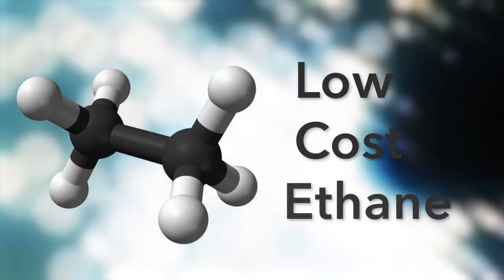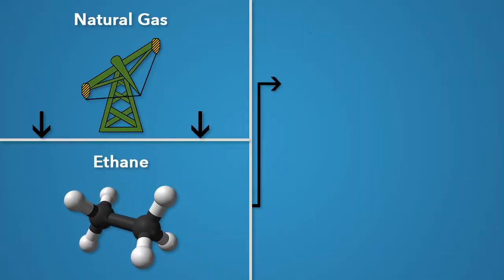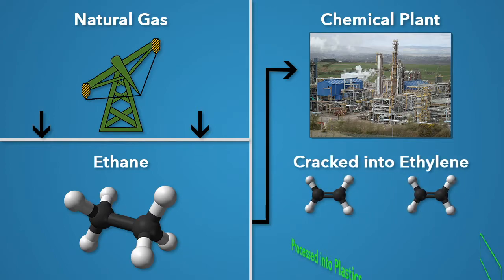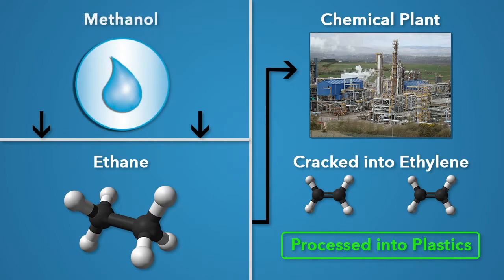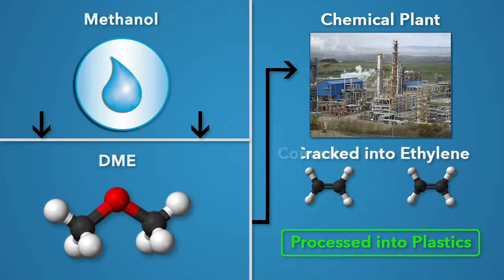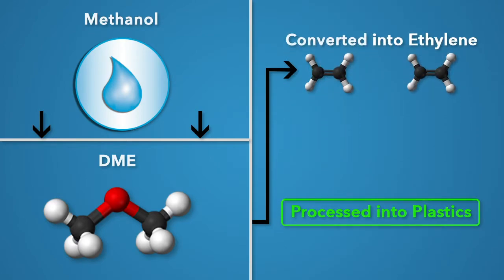In today's market, MTO is not so competitive due to the low costs of ethane. When comparing an MTO process, you compare the cost of methanol to the cost of ethane. Ethane comes from natural gas — it's one of the methane, ethane, propane, butane fractions — and is sent to chemical plants where it's cracked into ethylene and processed into plastics. An MTO process does the same thing: it takes methanol, converts that to DME, and that DME is converted into ethylene — the same ethylene that comes from an ethane cracker. Once you're at that step, the downstream processes to plastics are essentially the same.